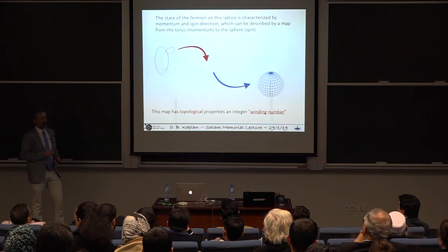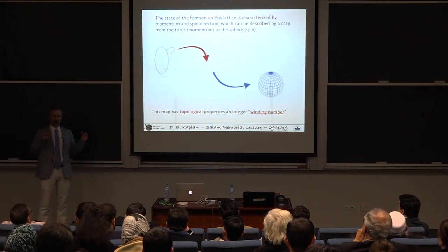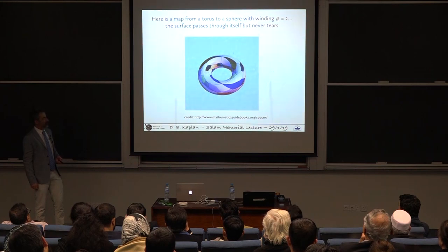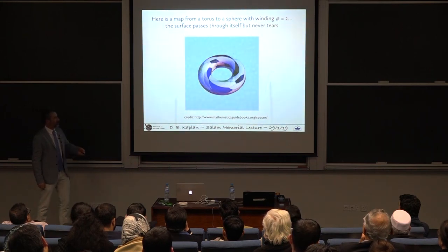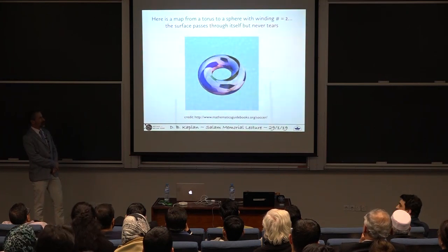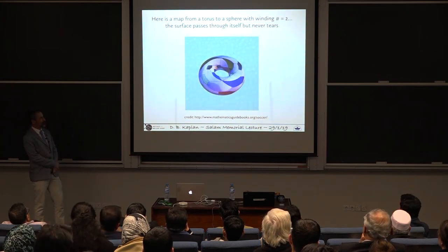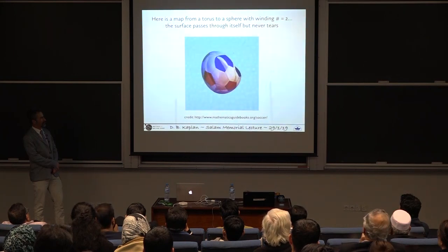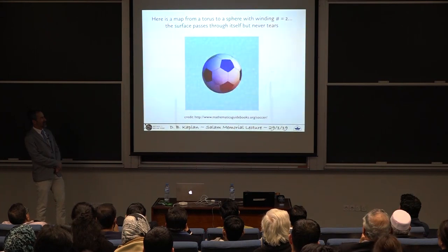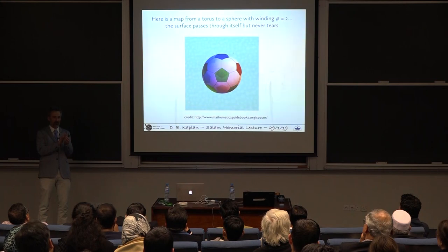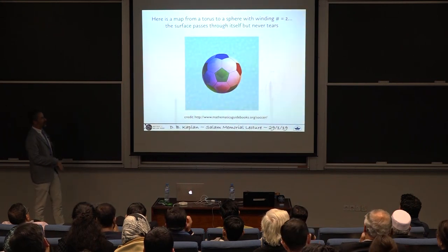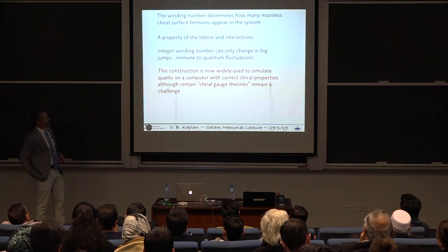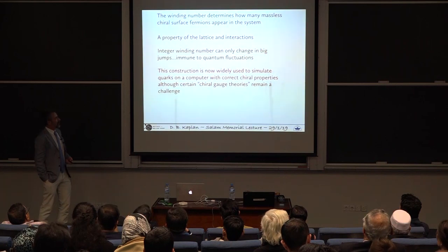So here's a picture of a way to map a torus onto a sphere that maps one torus onto a sphere twice. Here's a torus, we're going to turn that into a sphere, or a soccer ball. The surface is going to have to pass through itself, but it never tears. If you look at it carefully, you'll see that that soccer ball actually has two layers. That one surface of the torus gets doubled over to make two layers in the soccer ball. So that has winding number two. Now, why do I care about winding number?